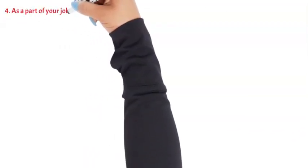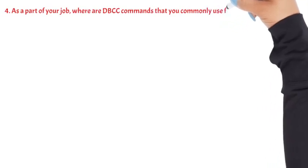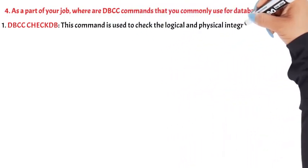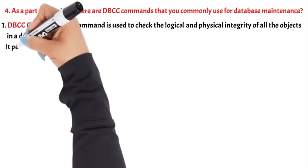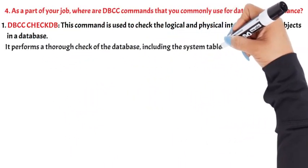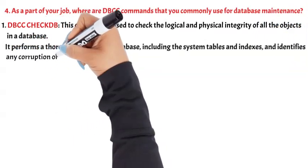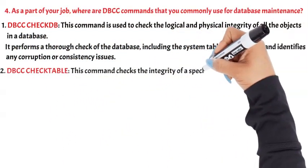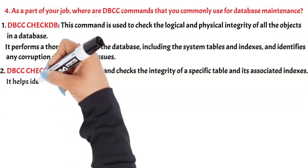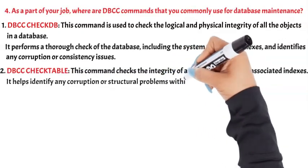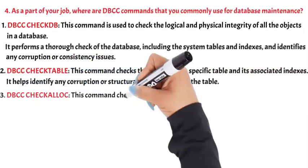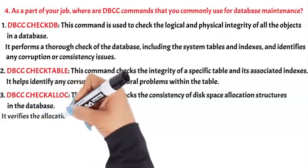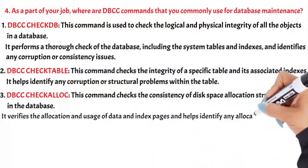Question 4: As part of your job, what are DBCC commands that you commonly use for database maintenance? 1. DBCC CheckDB: This command is used to check the logical and physical integrity of all the objects in a database. It performs a thorough check including system tables and indexes, and identifies any corruption or consistency issues. 2. DBCC CheckTable: This command checks the integrity of a specific table and its associated indexes, helping identify any corruption or structural problems. 3. DBCC CheckAlloc: This command checks the consistency of disk space allocation structures in the database, verifying the allocation and usage of data and index pages.